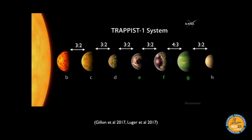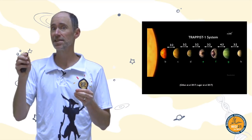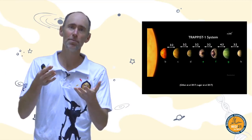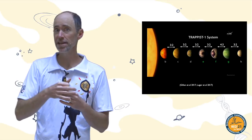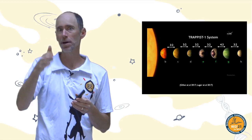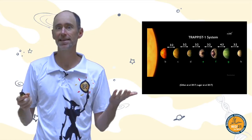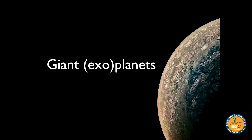Once in a while a resonant chain survives, producing some of the coolest systems we know. TRAPPIST-1, for example, has seven roughly Earth-size planets, three of which fall in the classical habitable zone. Its resonant structure helps us understand its formation and orbital dynamics. The resonant chain also means the planets' orbits are coplanar, so if we're lucky enough to see one transit we'll likely see them all — and indeed all seven planets are observed in transit.